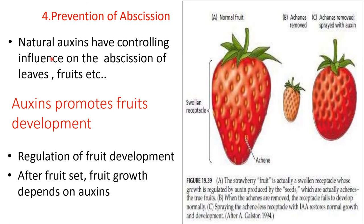Prevention of abscission. Natural auxins have a controlling influence on abscission of leaves and fruits. Auxin promotes fruit development. After fruit set, fruit growth depends on auxin. For example, the strawberry fruit is actually a swollen receptacle whose growth is regulated by auxin produced by the achenes, which are actually the true fruits. When the achenes are removed, the receptacle fails to develop normally. Spraying the achene-less receptacle with IAA restores normal growth and development.